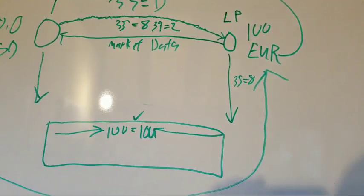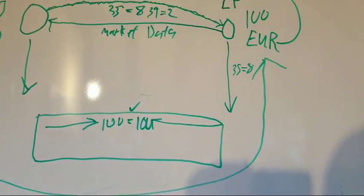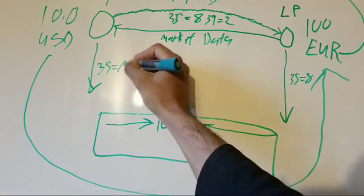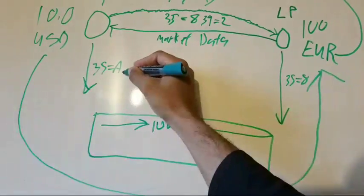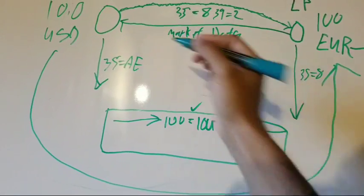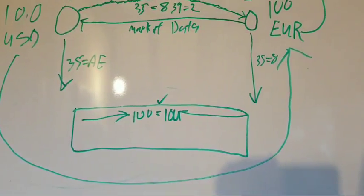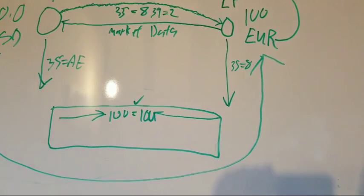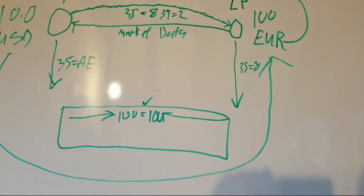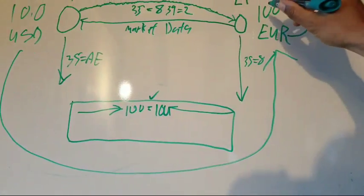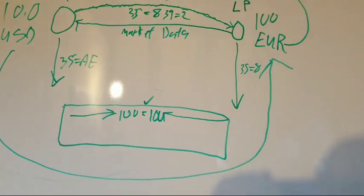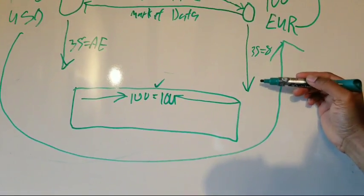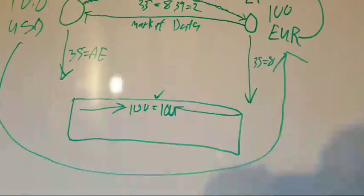Or you can send a trade report message. So you can send a 35=AE. And there you go. Now in these messages, once again, all you're indicating is the details of a transaction that has already occurred.